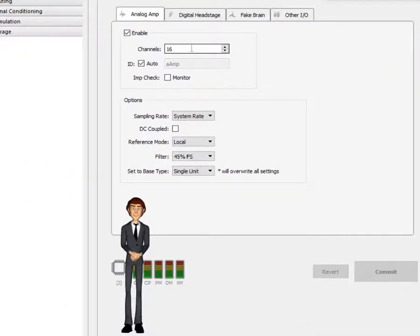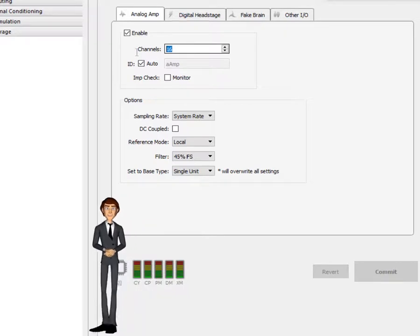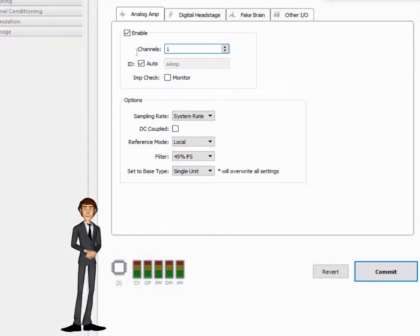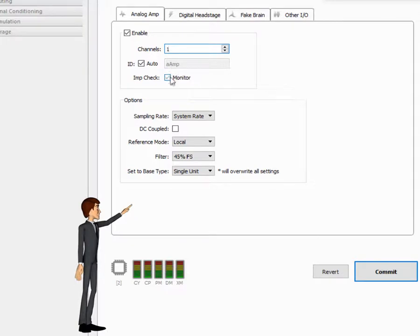Now we'll adjust a few settings. We need just one channel. Also click the impedance monitor on, so we can check how well we did with the electrode application. Then select EMG from this list, and the LabRat amplifier will be configured with appropriate settings for EMG signals. Click the commit button to apply these changes.